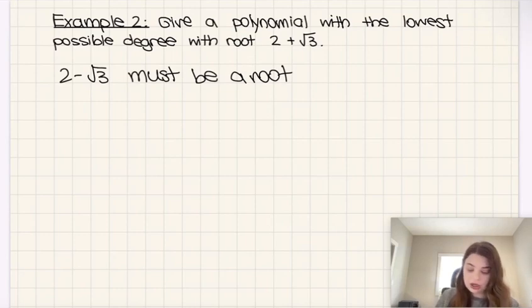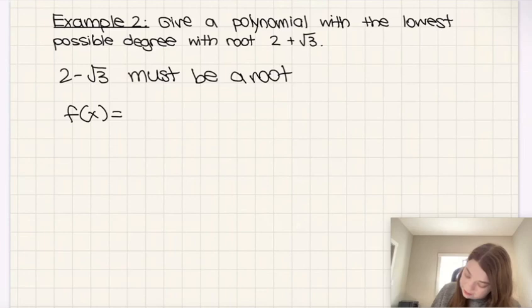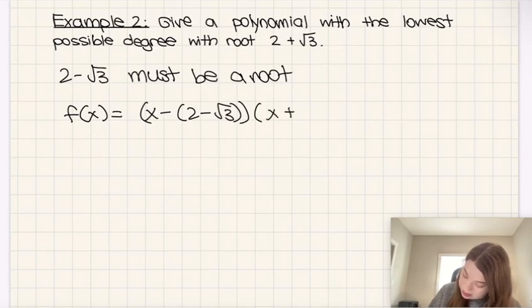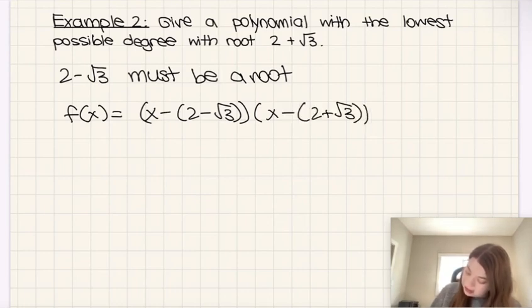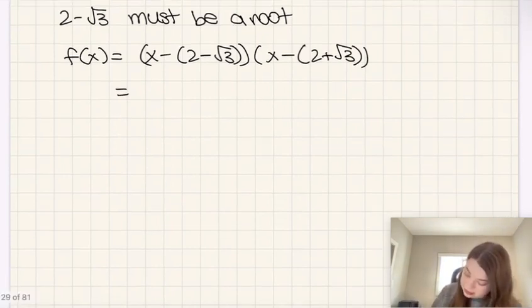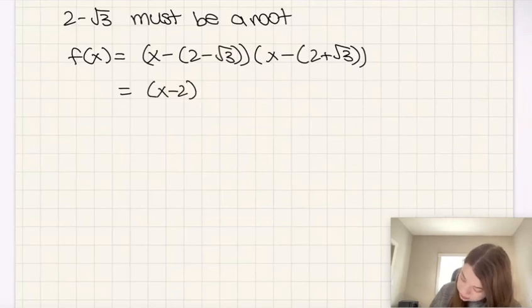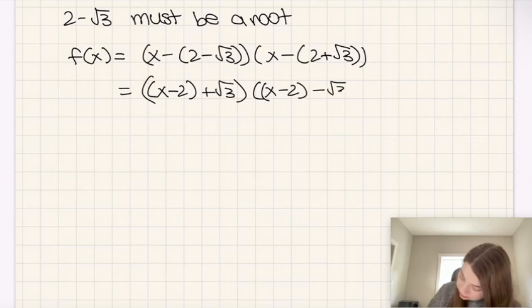And so therefore, the roots are 2 plus root 3 and 2 minus root 3. So that means our polynomial must take this form of x minus 2 minus root 3, and then x minus 2 plus root 3. And then same thing as before, I'm just going to rearrange this a little bit and go with x minus 2 plus root 3 and x minus 2 minus root 3.